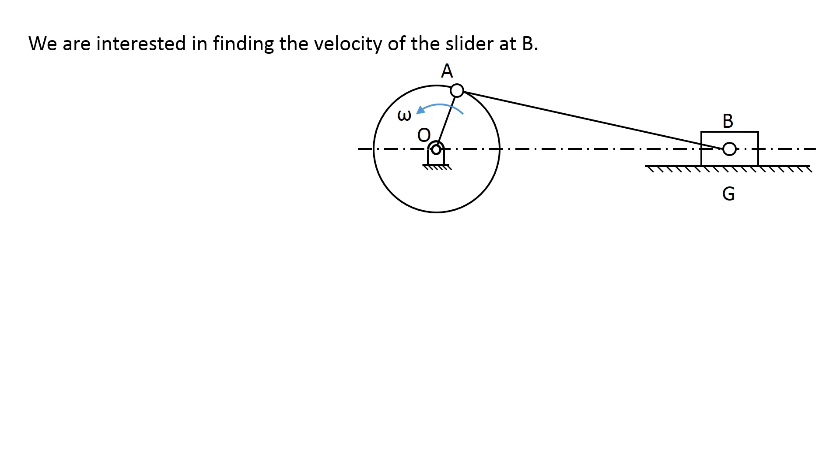We are interested in finding the velocity of the slider at B. We can write the velocity vector equation for point B as velocity of B relative to O equals velocity of B relative to A plus velocity of A relative to O.